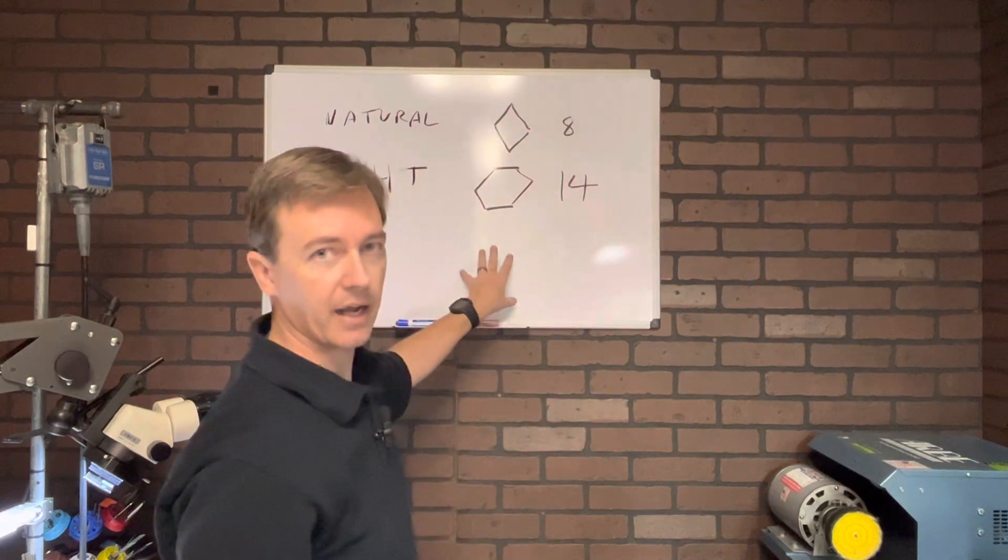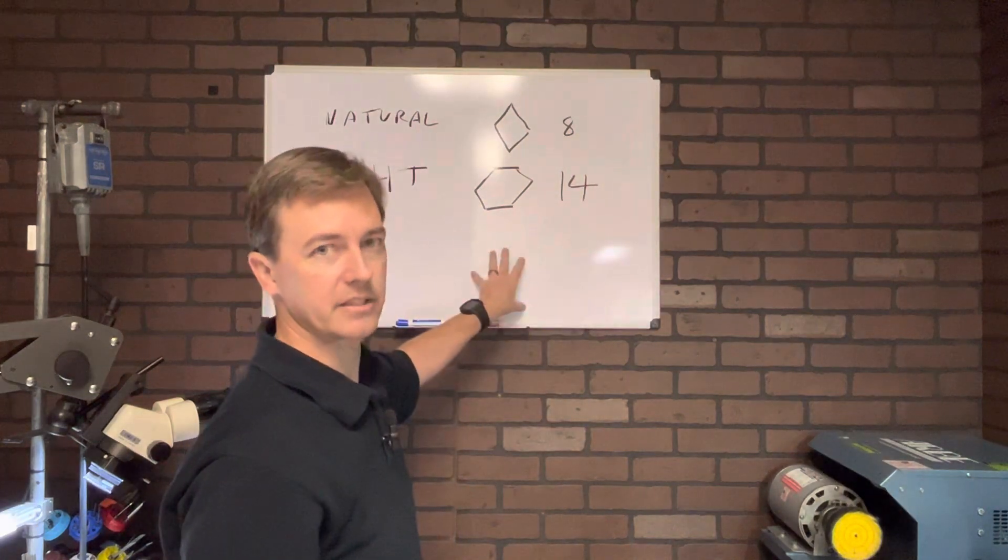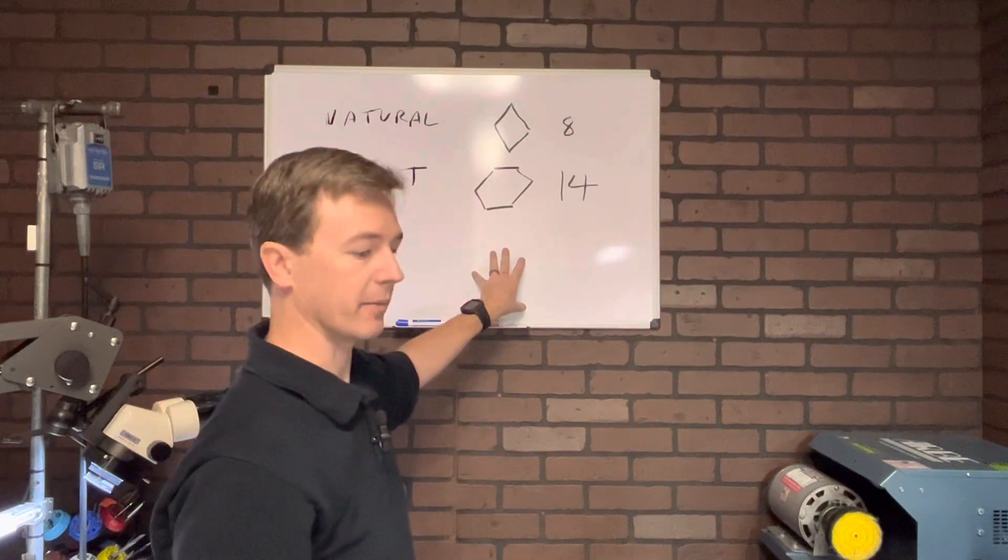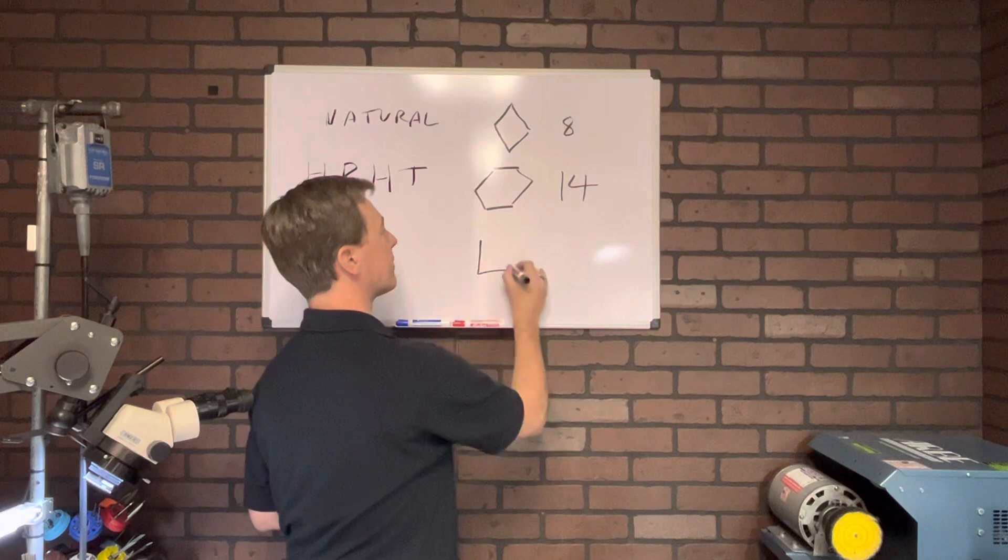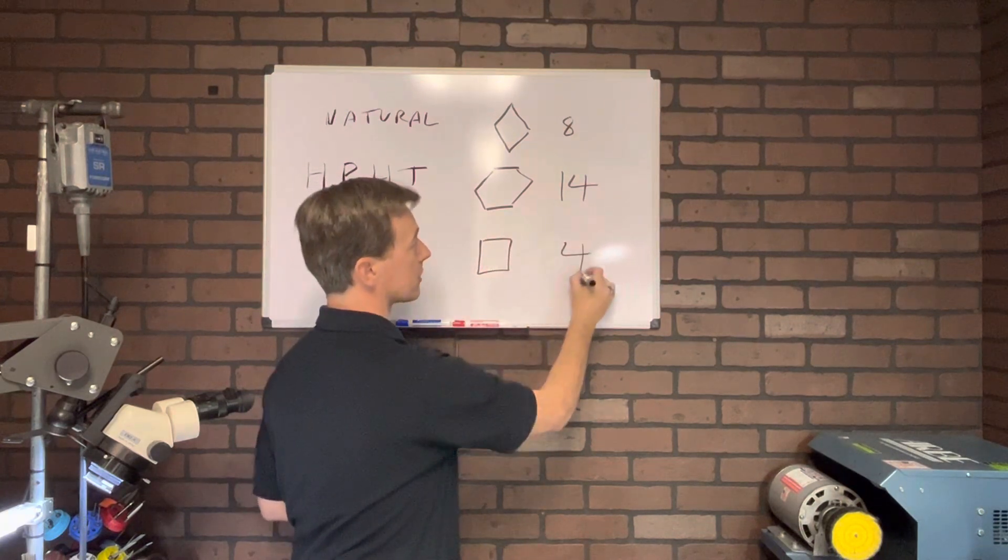Now you can't see this with the naked eye. This is what all that expensive testing equipment is able to determine. And then with the chemical process, you end up with cubicle crystals. So your four-sided crystals.